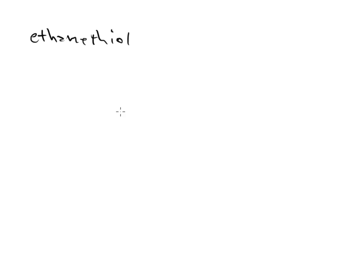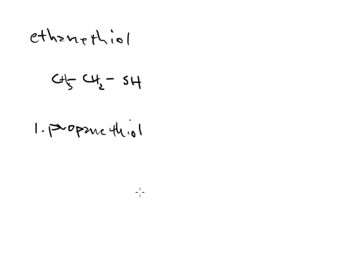Let's do some examples. To draw ethanethiol: ethane is two carbons, and thiol is SH. So CH3CH2SH - that is ethanethiol, the IUPAC name for this structure. To draw 1-propanethiol: propane is three carbons, one, two, three. The thiol is an SH group on carbon number one. So I'll draw an SH group there. Simple, easy, breezy.